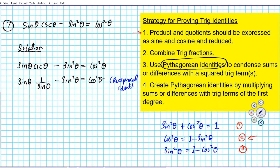Do you see what we can do now? We can proceed to cancel out — we can divide out the sines. Sine goes into sine once, sine goes into sine once, and then we multiply the resulting product on the left side. We have one minus sine squared theta equals cosine squared theta.